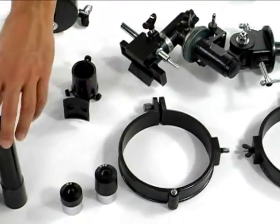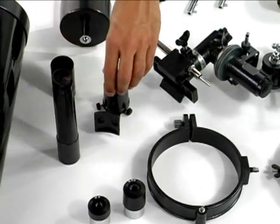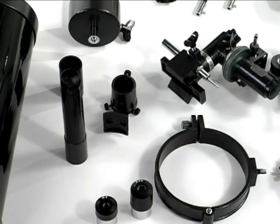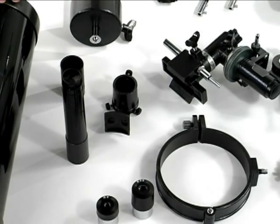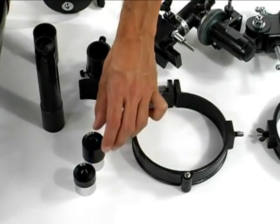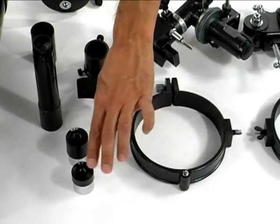This unit and this unit right here are your finder scope for aligning your celestial object you'll be looking through before looking through your telescope itself. These two units right here are your eyepieces. You have a 20 millimeter and a 9 millimeter.